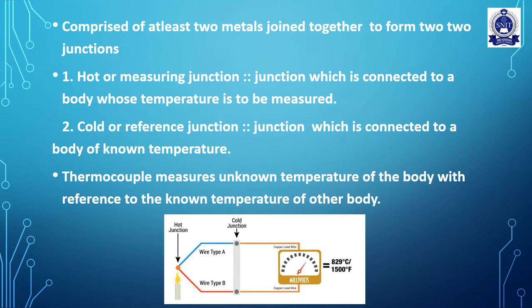There are two junctions: the hot or measuring junction, and the cold or reference junction. The hot junction is the junction connected to the body whose temperature is to be measured. The cold junction is connected to a body of known temperature.